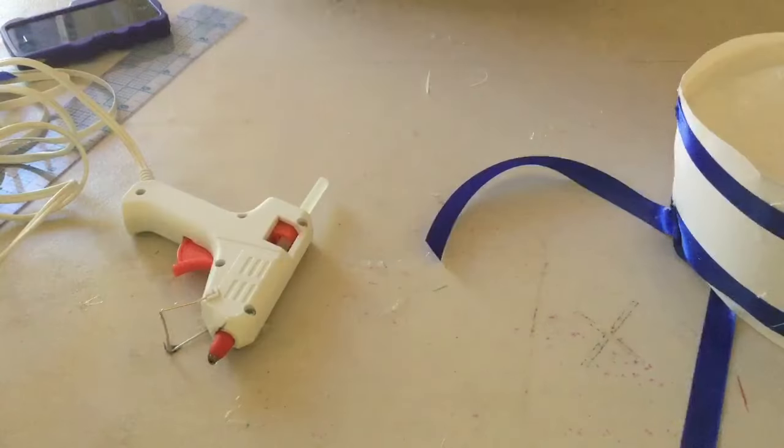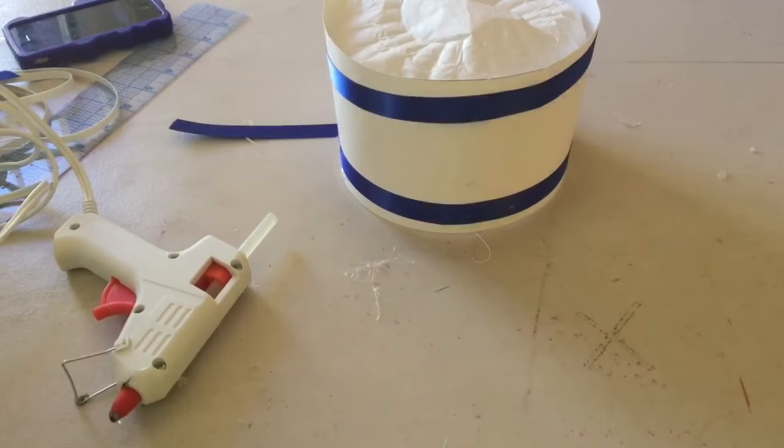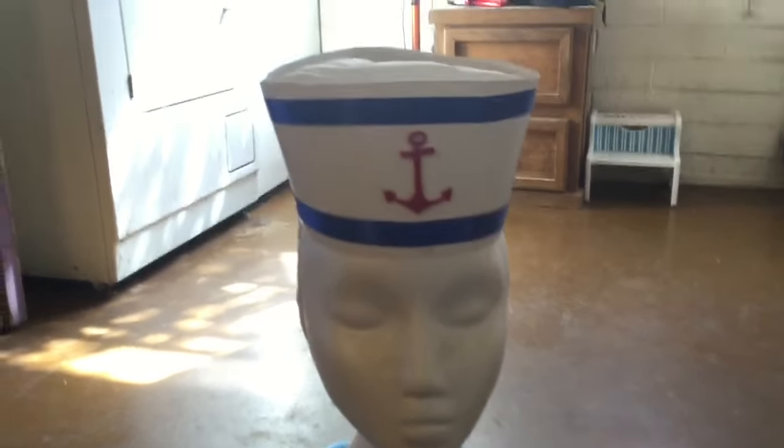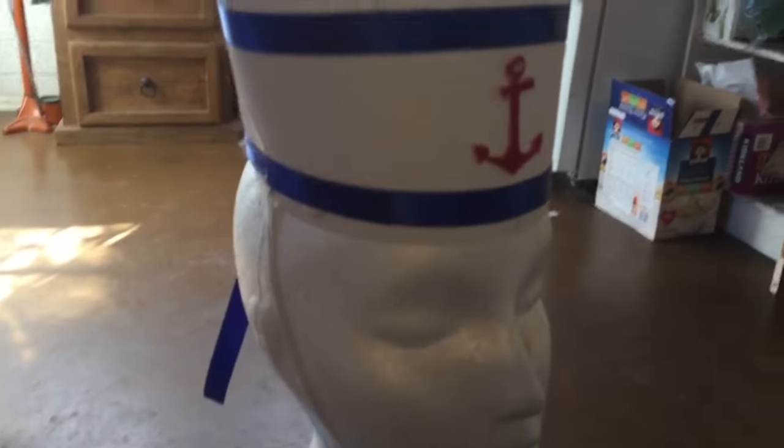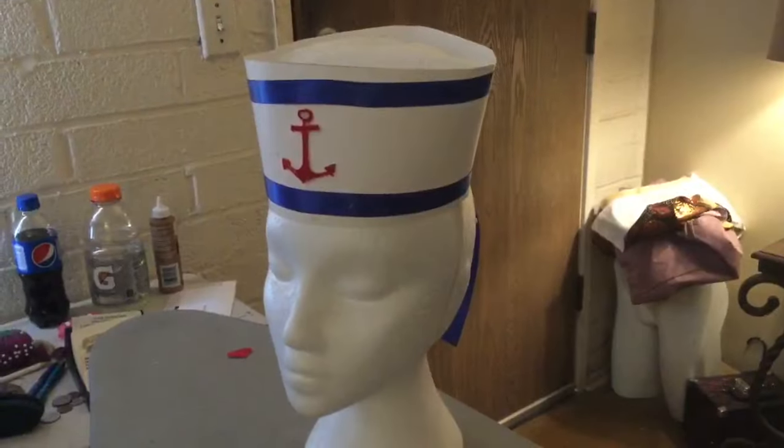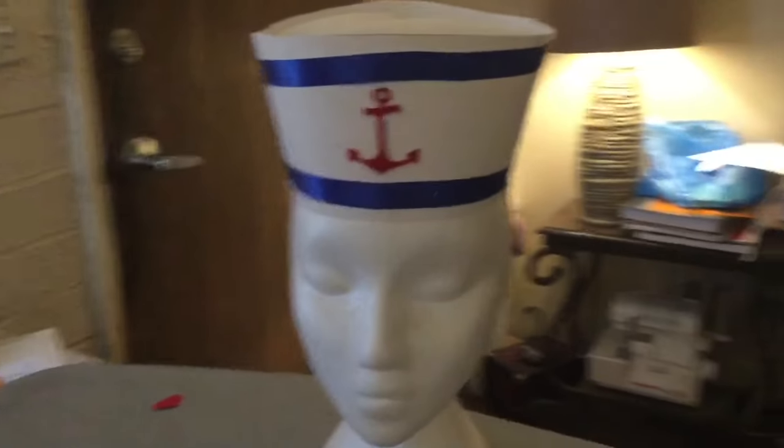Once you have those on, you should be just about ready for finishing touches. For my finishing touches, I wanted to add a red anchor to the front, so I found a piece of fabric that had a red anchor on it and I used the appliqué method that I showed you guys last week to make the anchor for the front of the hat. I will put a link here to that video for you. Don't forget to add some elastic to your hat to hold it on your head, and then voila, you are done.